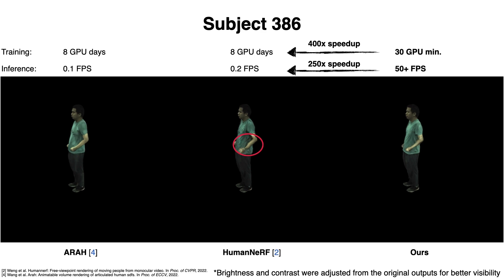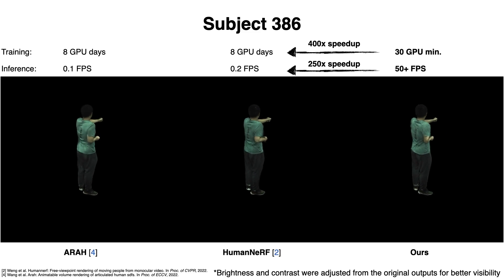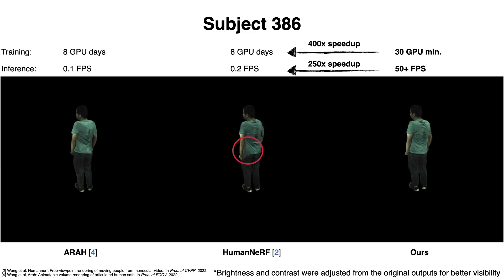Meanwhile, our method produces comparable or even better rendering quality. From the results, we show that our method preserves sharper details compared to ARAH and does not produce fluctuating artifacts in Human NeRF caused by noisy deformation fields.